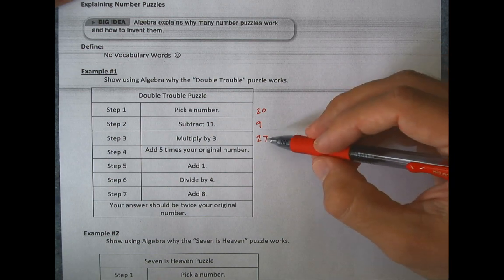So I'm at 20. If I subtract 11, I'm at 9. If I multiply by 3, I'm at 27. Now I have to add 5 times my original number. So my original number is 20. 5 times 20 is 100. So I've got to add 100 to this. So 127. Add 1 to that, 128.